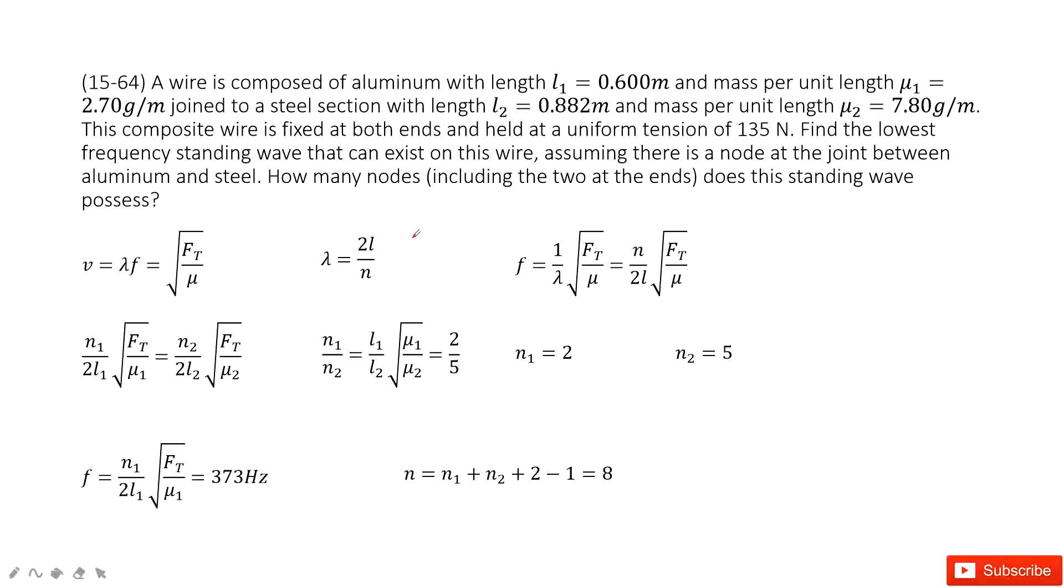So there we have the two strings, the two wires. First wire L1 and the mu1 is given. The second wire L2 and mu2 is given. And then we connect them and then becomes a new wire.